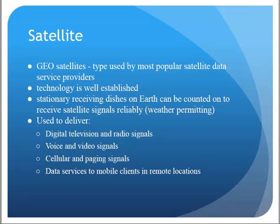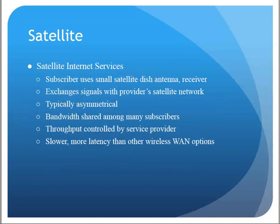Your geosynchronous, geostationary satellites are most popular for data because they're in that predictable location — for television and radio. Weather is a factor on these. Anybody that's ever had satellite TV knows that in certain weather conditions — foggy, rainy, snowy — it can affect your signal and the data you're receiving. Here we have a dish antenna pulling information down from the satellite.